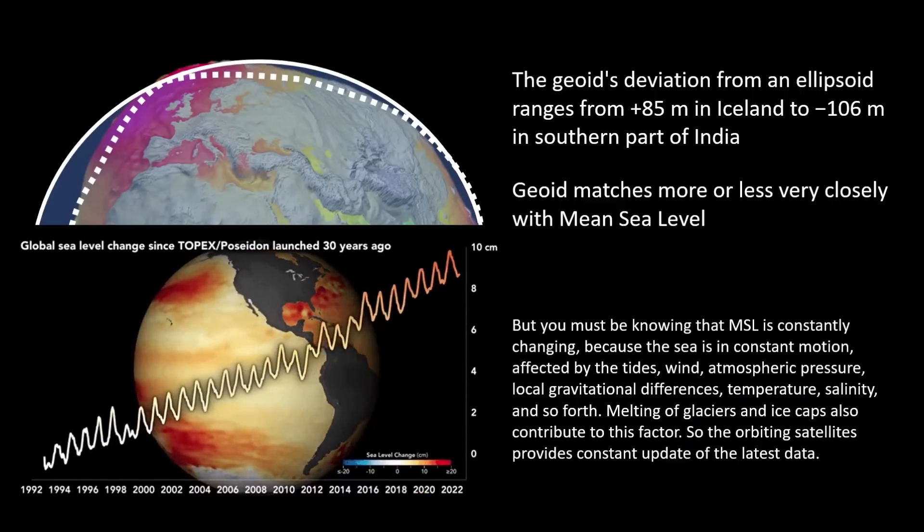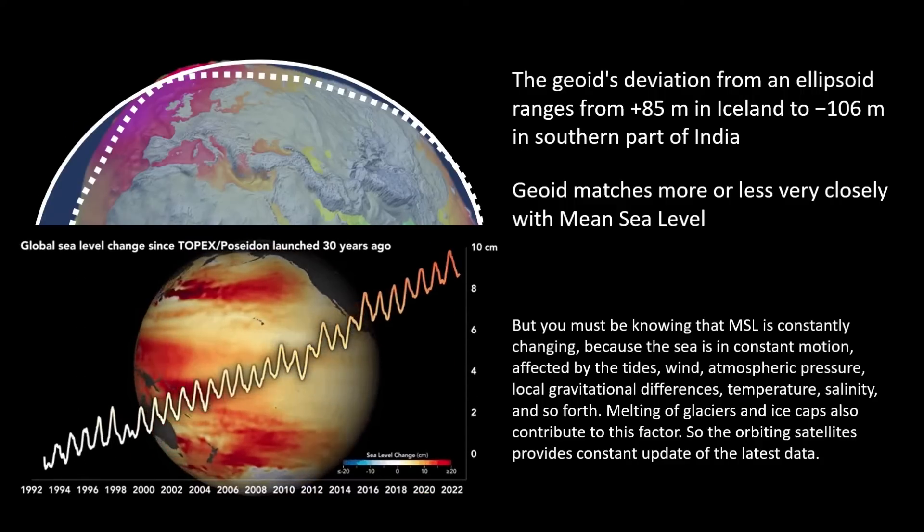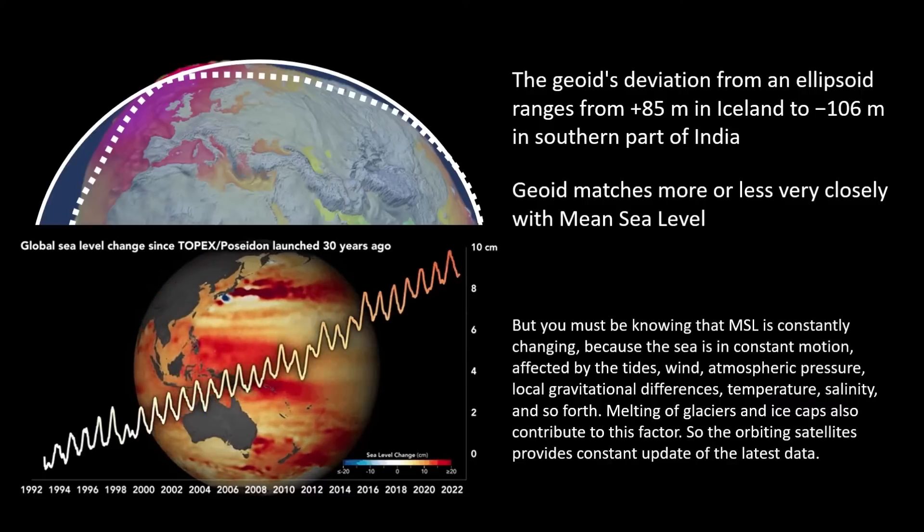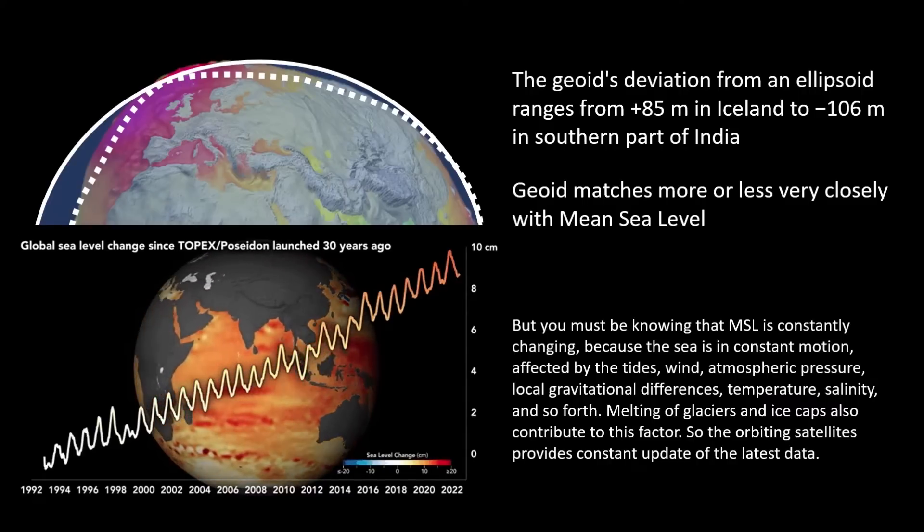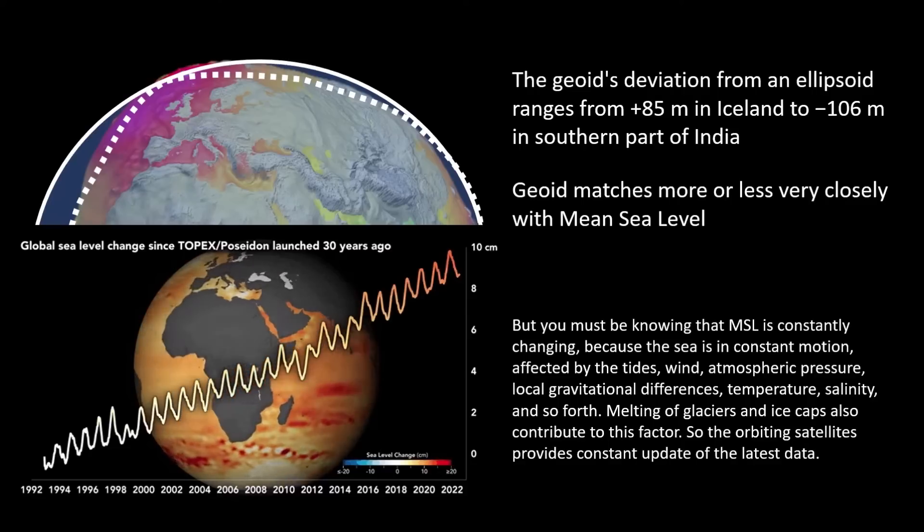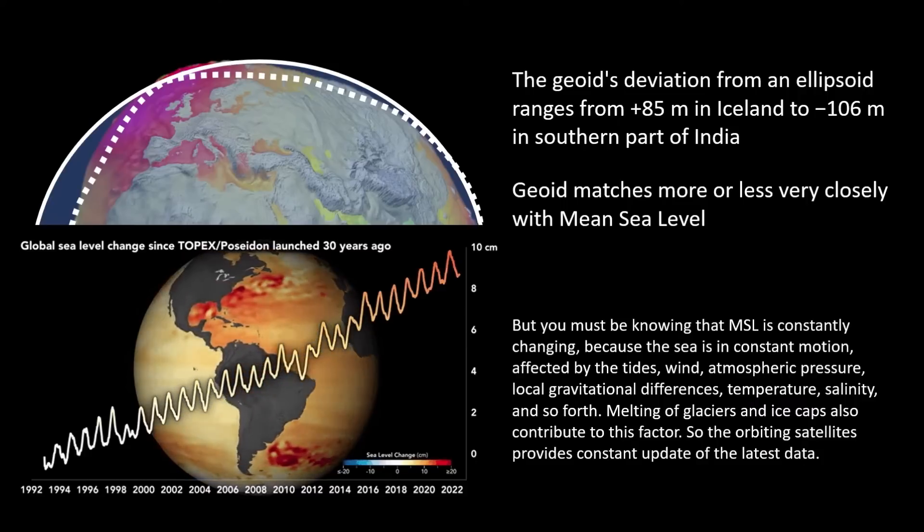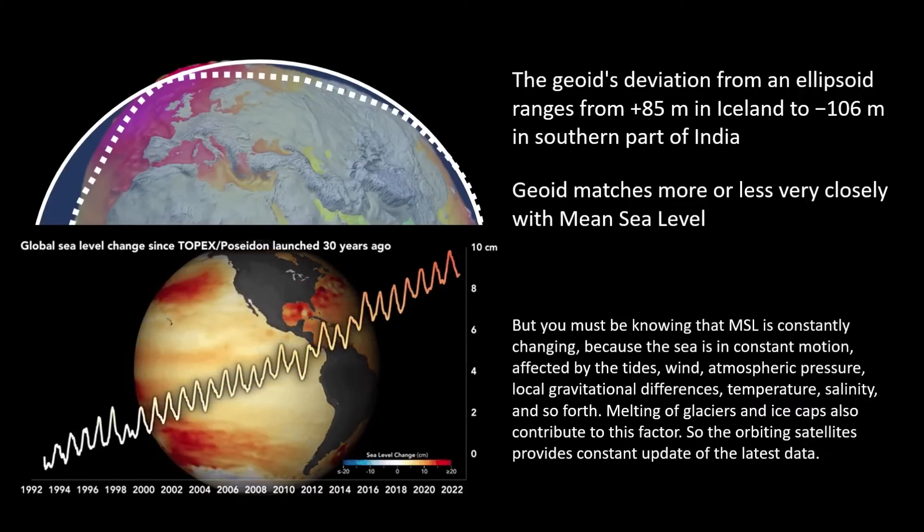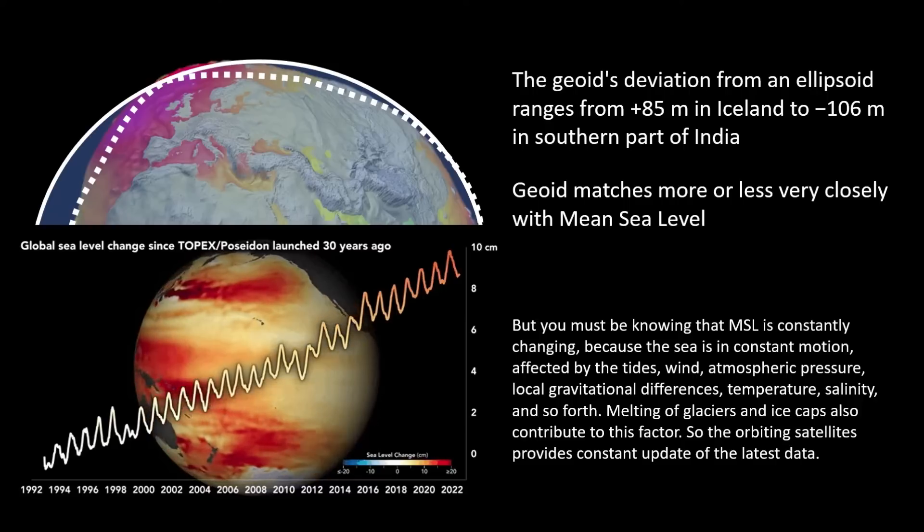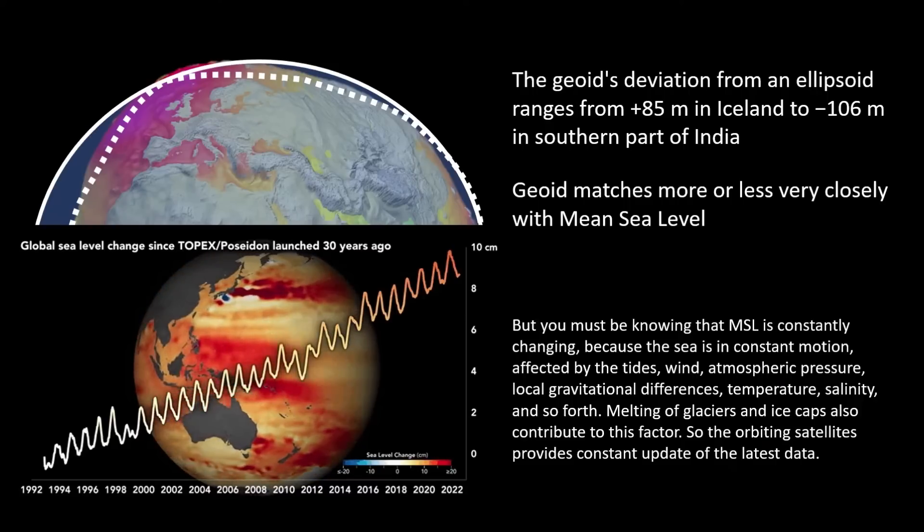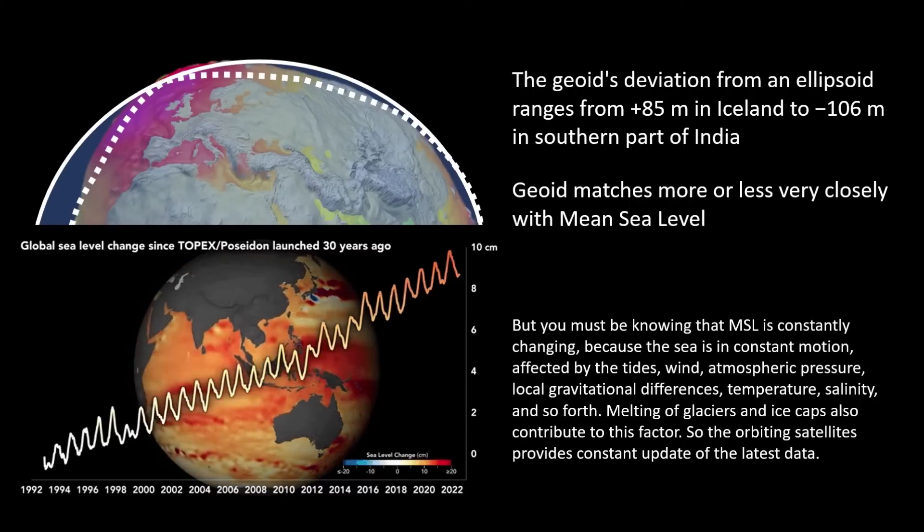But you must know that MSL is constantly changing because the sea is in constant motion, affected by the tides, wind, atmospheric pressure, local gravitational differences, temperature, salinity, and so forth. Melting of glaciers and ice caps also contribute to this factor. The orbiting satellites provide constant updates of the latest data.